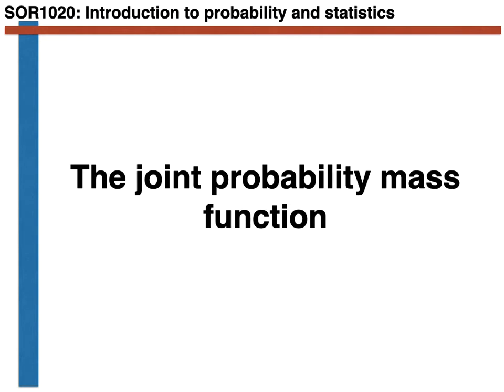In the previous week we introduced the cumulative probability distribution function for a random variable, and we noted that the cumulative probability distribution function tells us the probability that the random variable X is less than or equal to some small x.